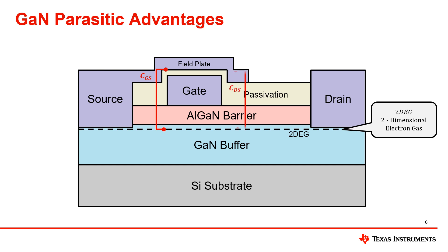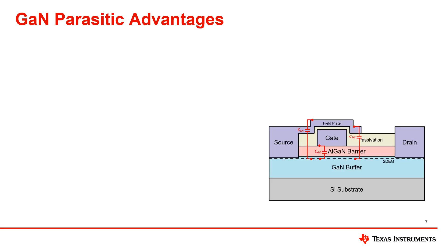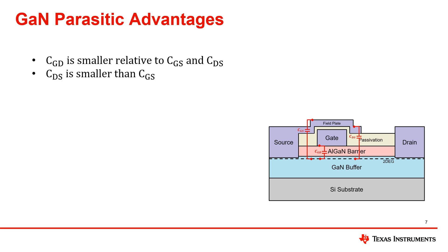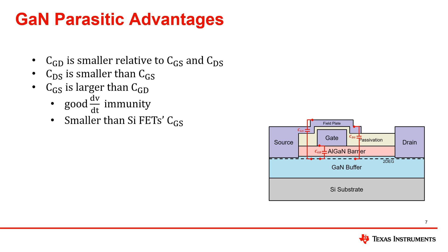The drain-to-source capacitance is the capacitance between the field plate and the drain terminal from the channel, and its value is limited to the capacitance across the dielectric layer from the field plate to the drain. Lastly, the gate-to-drain capacitance is located in a small portion from the gate terminal connected to the channel. When it comes to the size of these capacitances, the gate-to-drain capacitance is smaller in size relative to the gate-to-source and drain-to-source capacitances. Since the gate-to-source capacitance is larger than the gate-to-drain capacitance, this gives the GAN FET good dV/dt immunity, and its size is still smaller relative to Si MOSFETs.